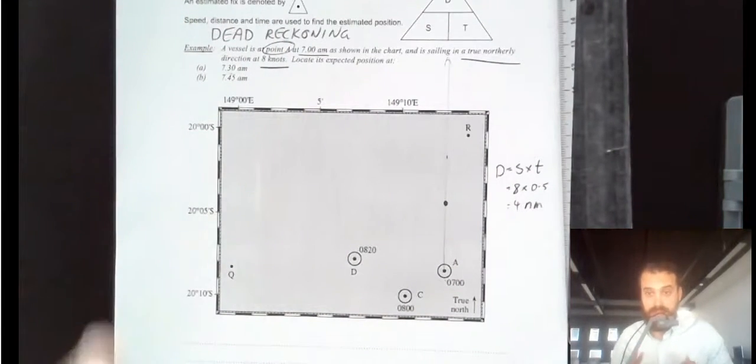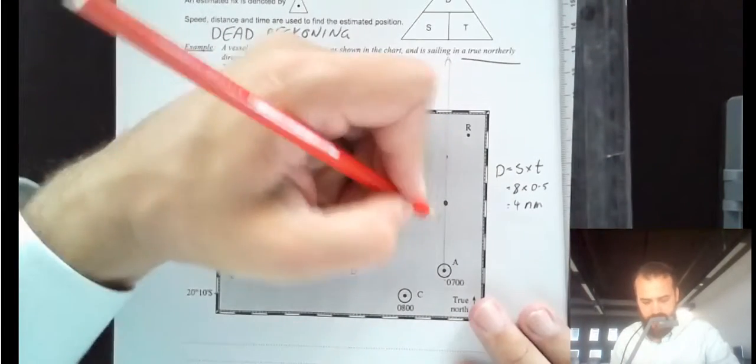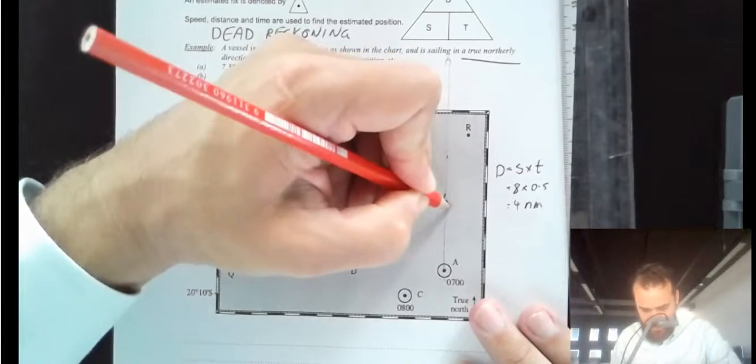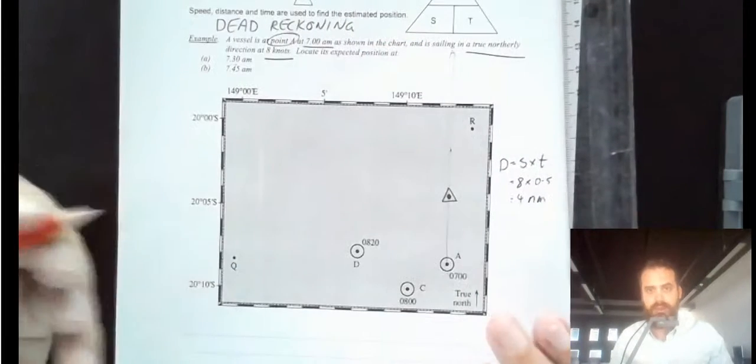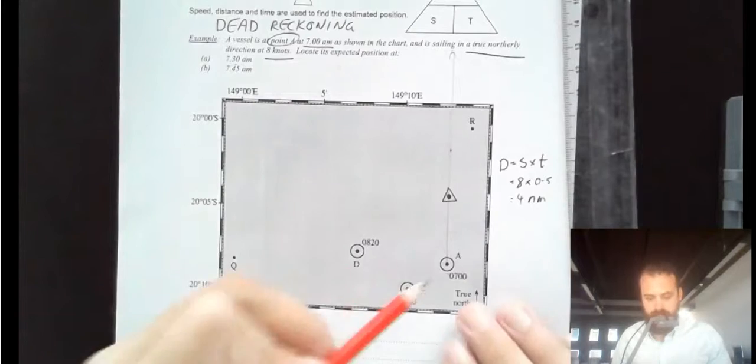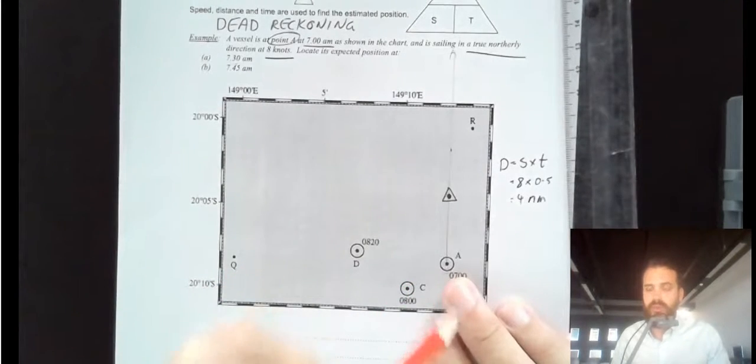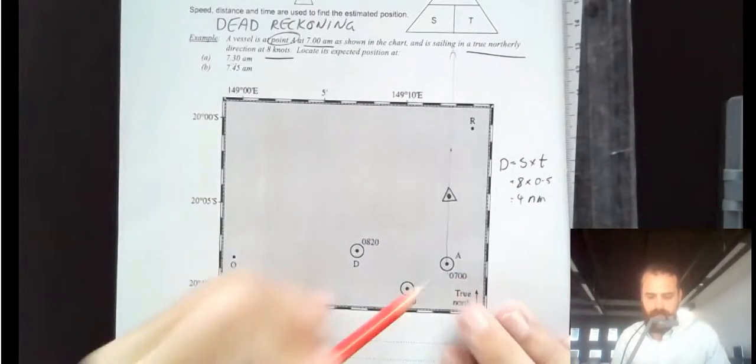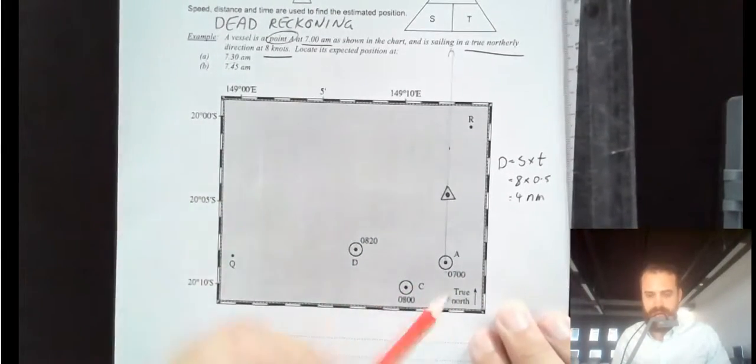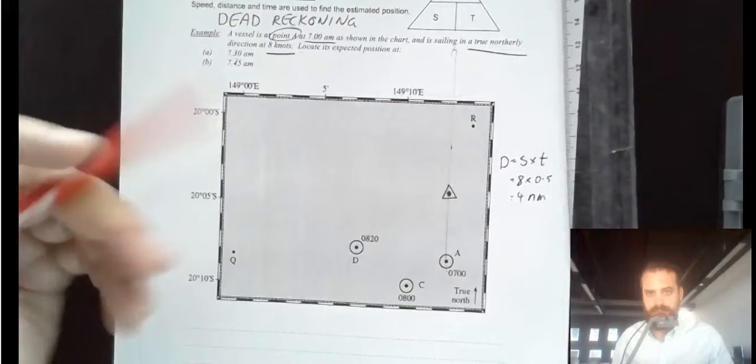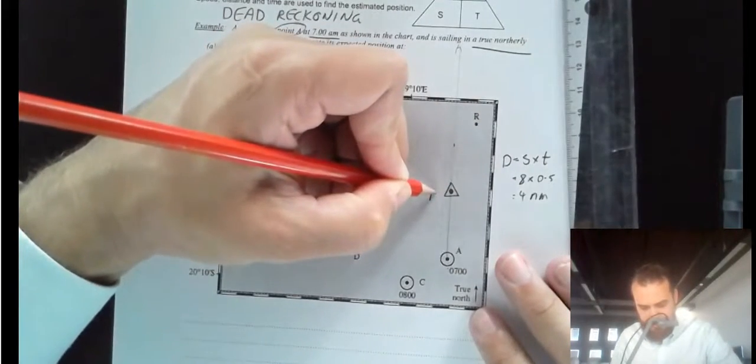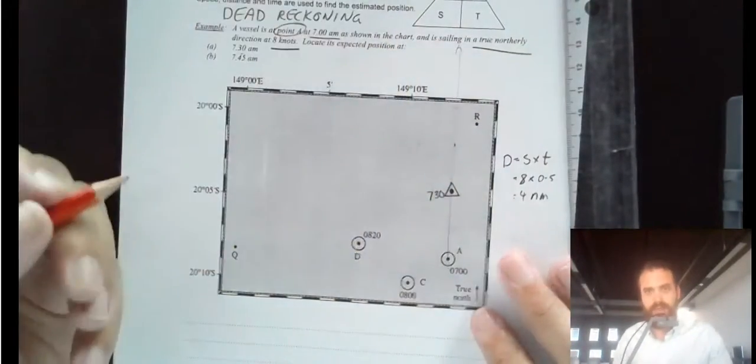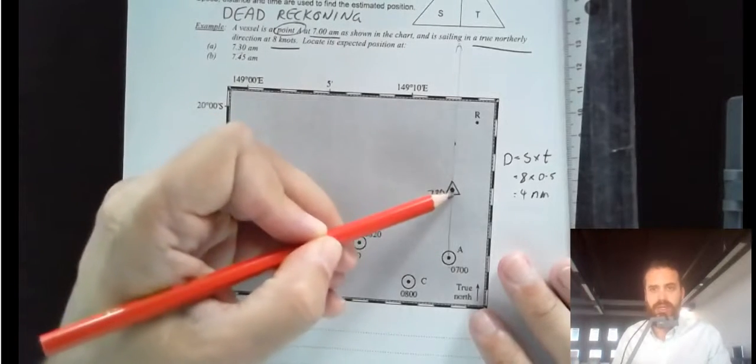Now because it's just an estimate, we show that on our map by drawing a triangle around it, not a circle. So circles mean we knew where we were. Maybe our GPS system was working, or maybe we had some sort of transit fix so we could see some places. But now we're out here, we can't see it. So just label that 7:30. At 7:30, we think we're there.